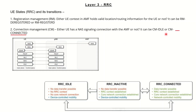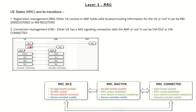Similarly, if NAS signaling connectivity starts happening between the core network and the user, it will be considered as CM connected mode. For idle mode, these two scenarios are basically RM deregistered and CM idle mode, where there is no connection between the user and the core network, and no data transfer is possible.